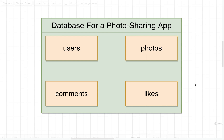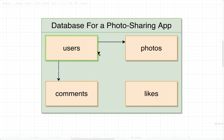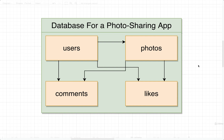We've established four different resources in this application. A user creates and owns different photos. A user creates and owns comments. Users also own and create likes. In addition, there's a relationship between photos and likes, because you can like a photo, and between photos and comments, because you can add a comment to a photo. By drawing these connecting lines, we can see relationships and ownership between records in each of these tables.